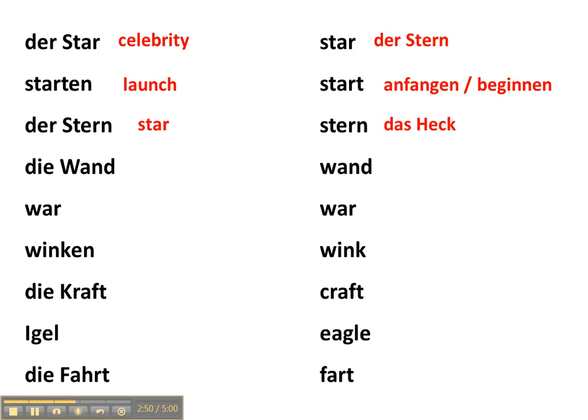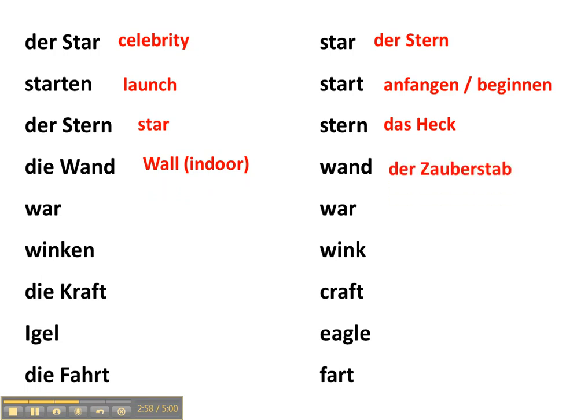Die Wand in German means the wall, normally an indoor wall. But a wand in English has the meaning of a Zauberstab in German.